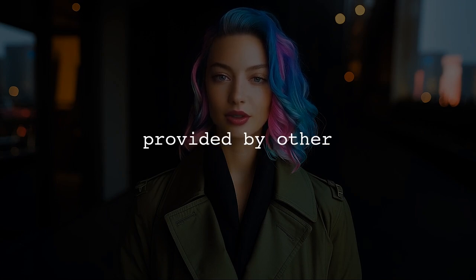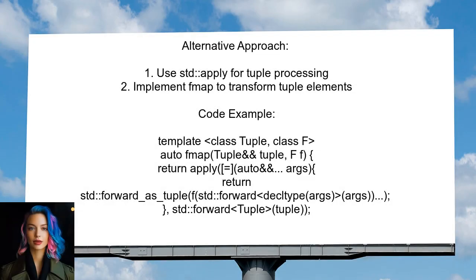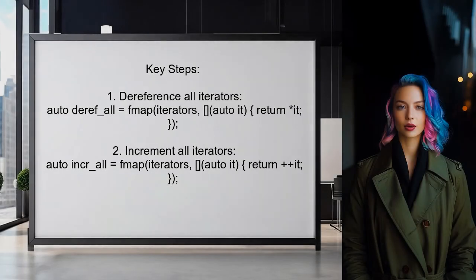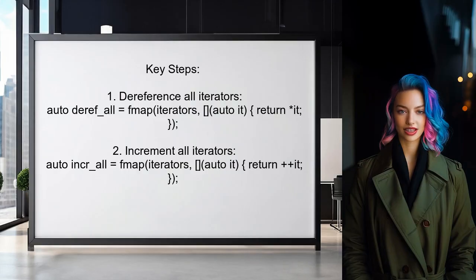Now let's look at the answers provided by other users. An alternative approach involves using the std::apply function introduced in C++17. They suggest implementing an fmap function for tuples, which allows you to apply a transformation to each element in the tuple. With this fmap function, you can dereference all iterators and increment them in a single step, simplifying the process of generating the Cartesian product.